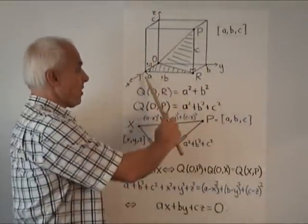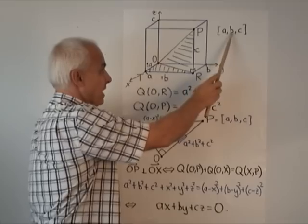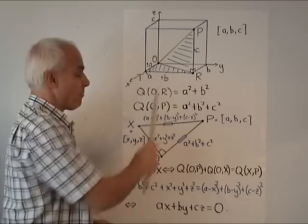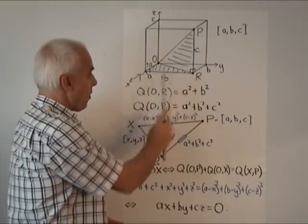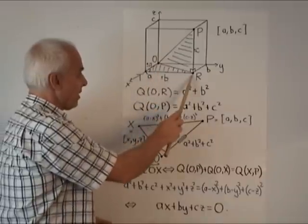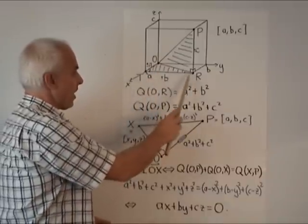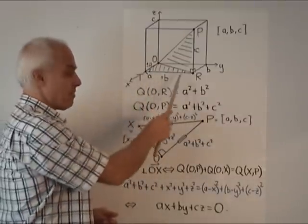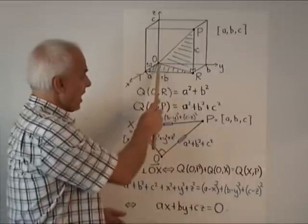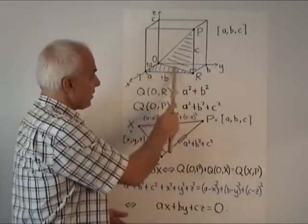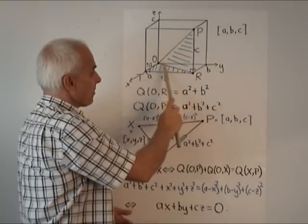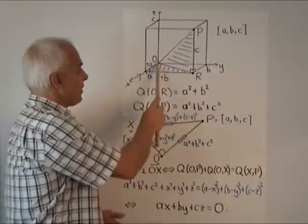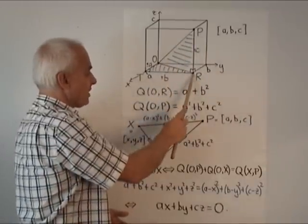Here's our coordinate system as before, and the point P with coordinates A, B, and C. If we drop a perpendicular down onto the XY plane, we'll call that point R. The distance between O and R from this right triangle is A squared plus B squared. This includes the possibility that A or B might be negative as well. Once we have this distance here, then we see that there's another right triangle going up to P.